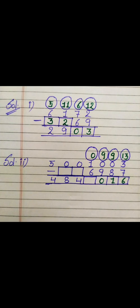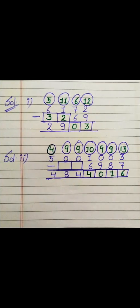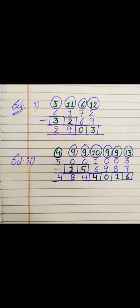Again we can't subtract 6 from 0, so we take borrow. This 0 becomes 10, the other zeros become 9, and the 5 becomes 4. Now 10 minus 6 equals 4. Next, we need to get 4, and 9 minus 5 equals 4. Then 9 minus 1 equals 8. By this method we have found all the missing digits.